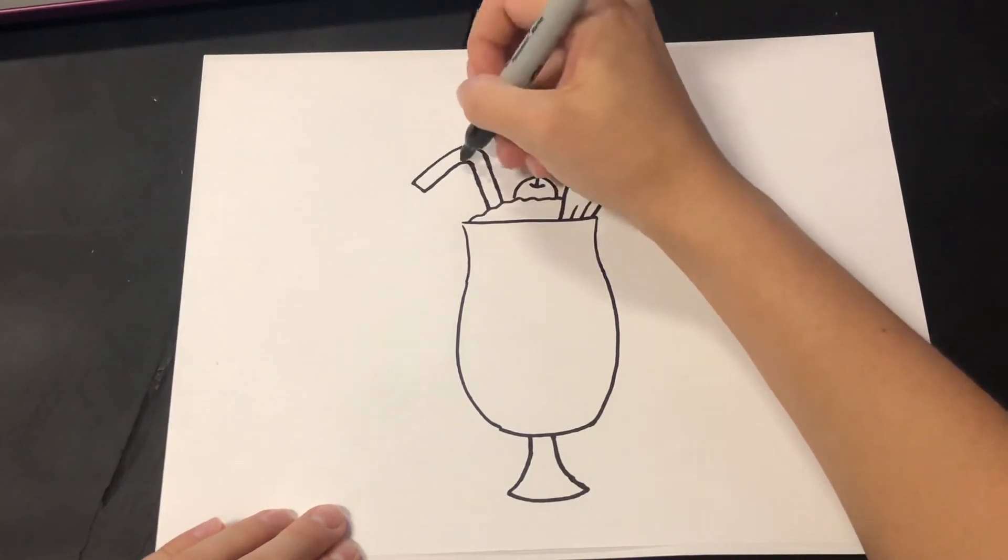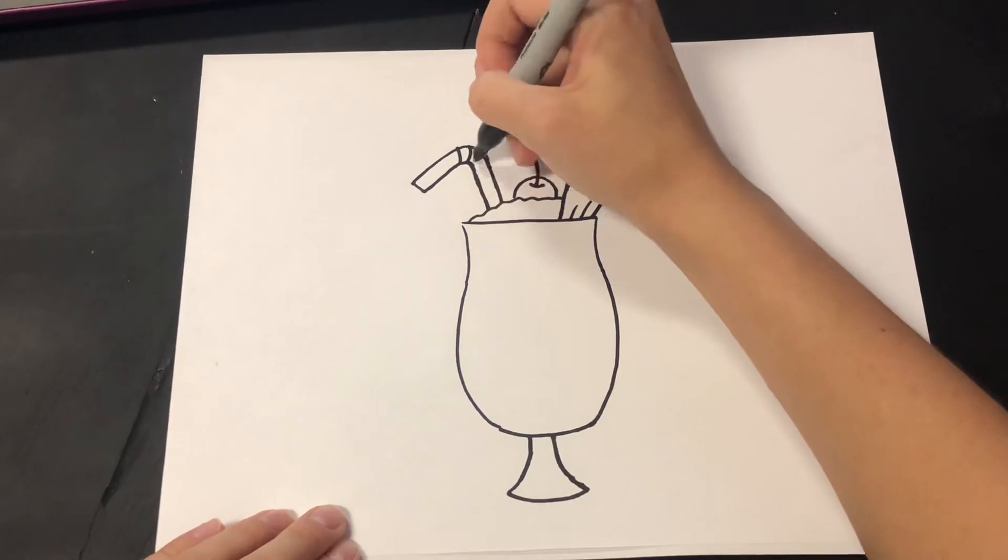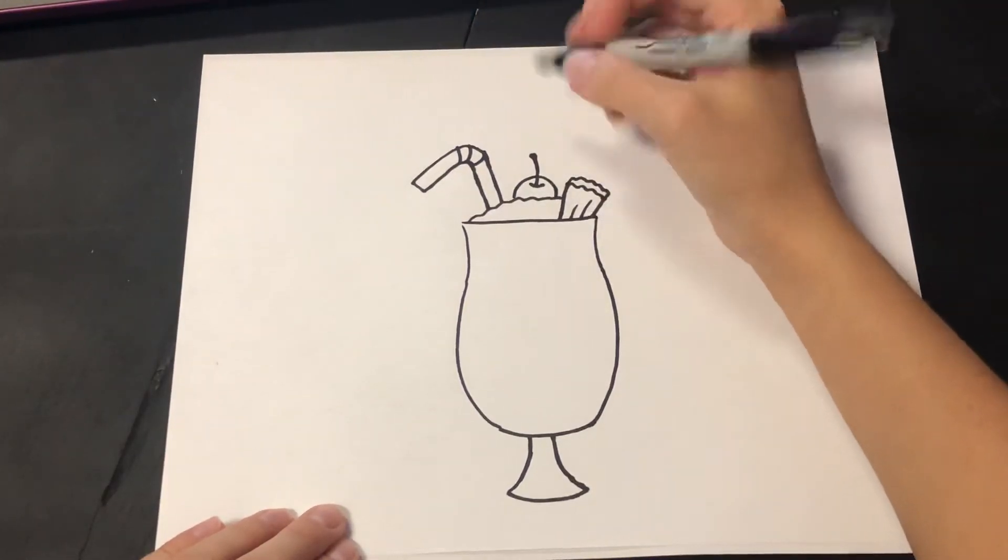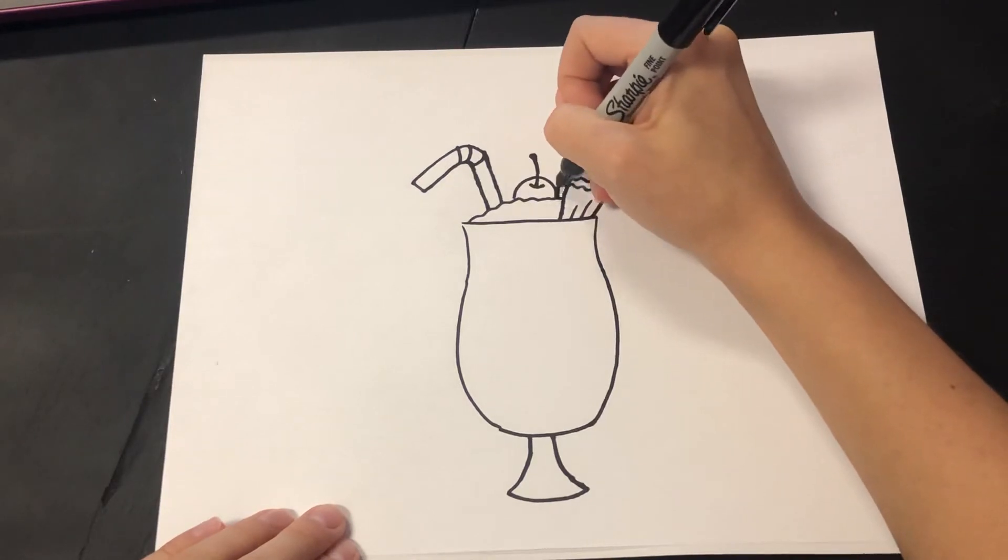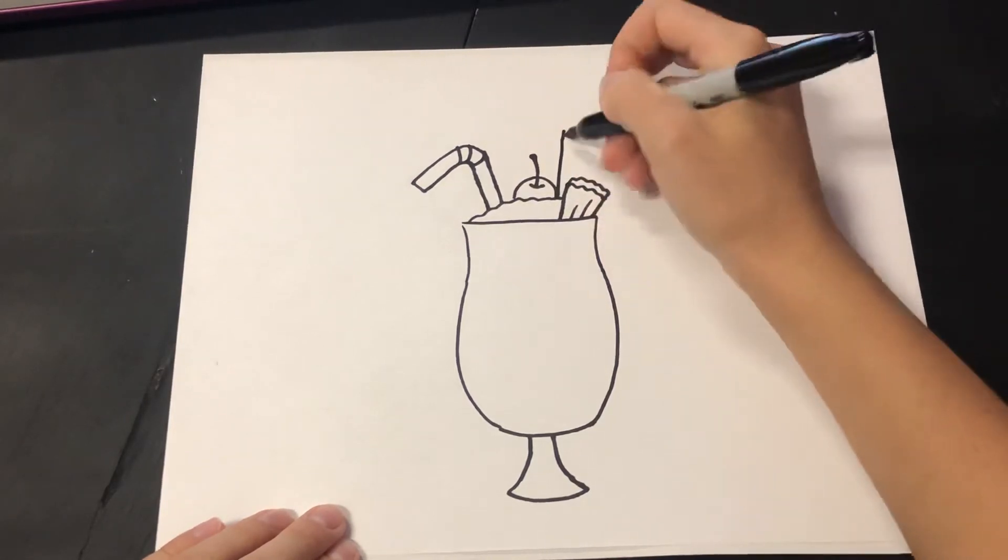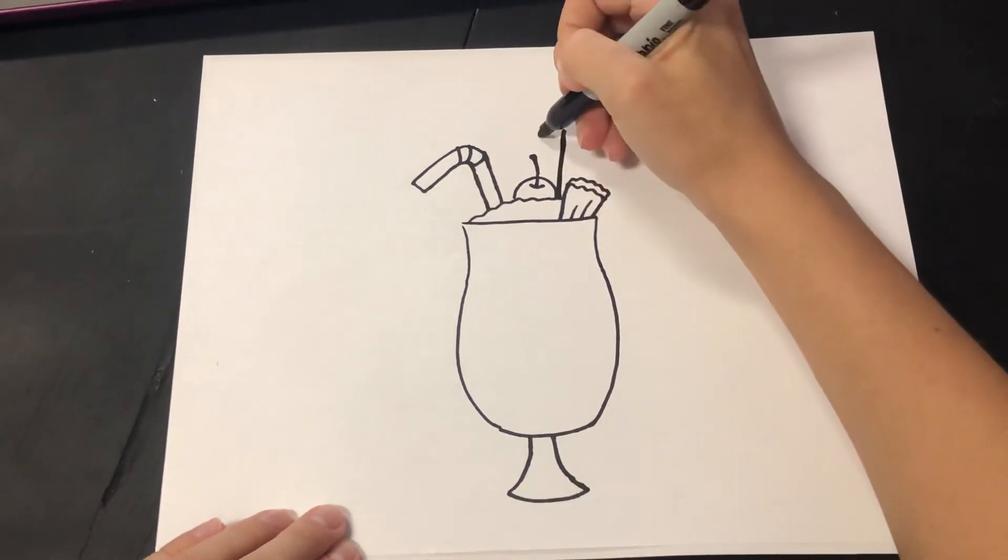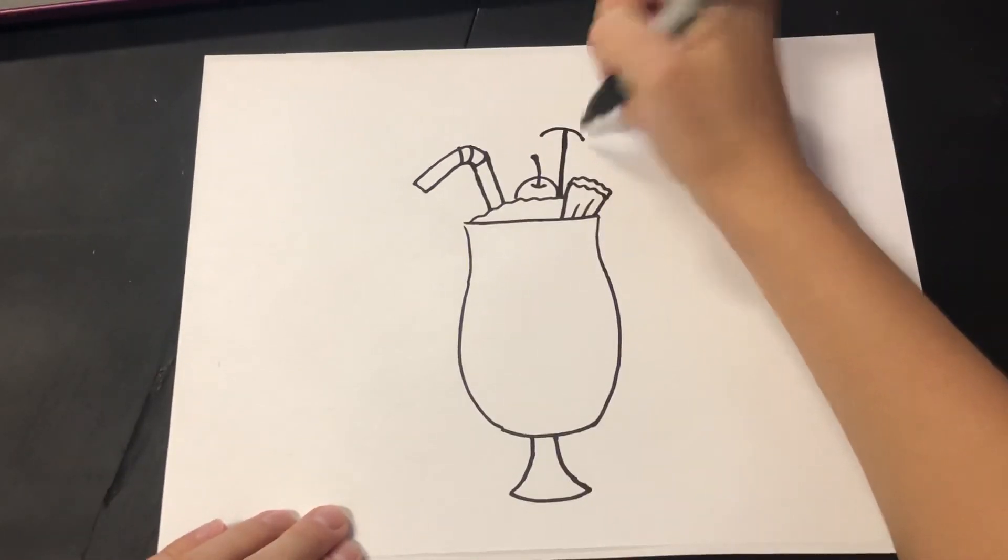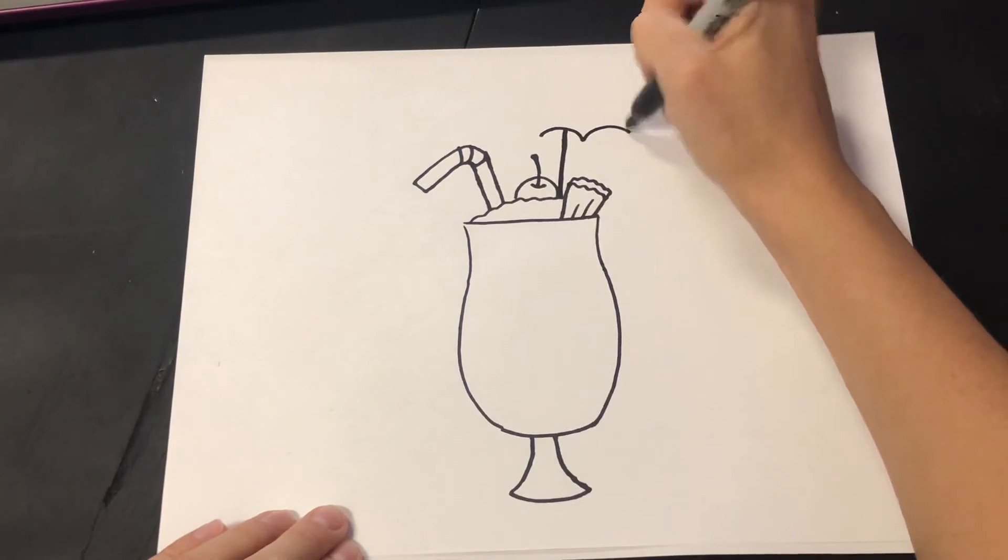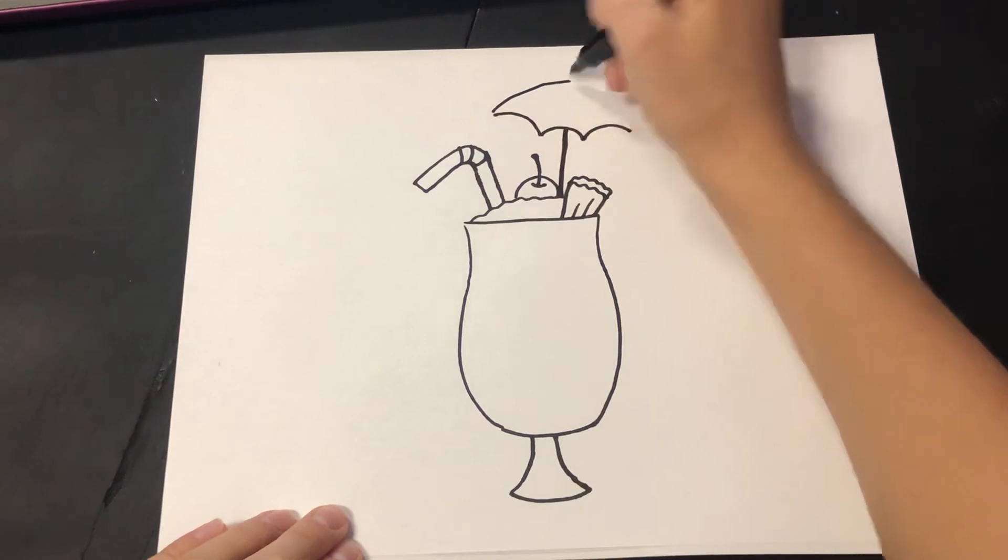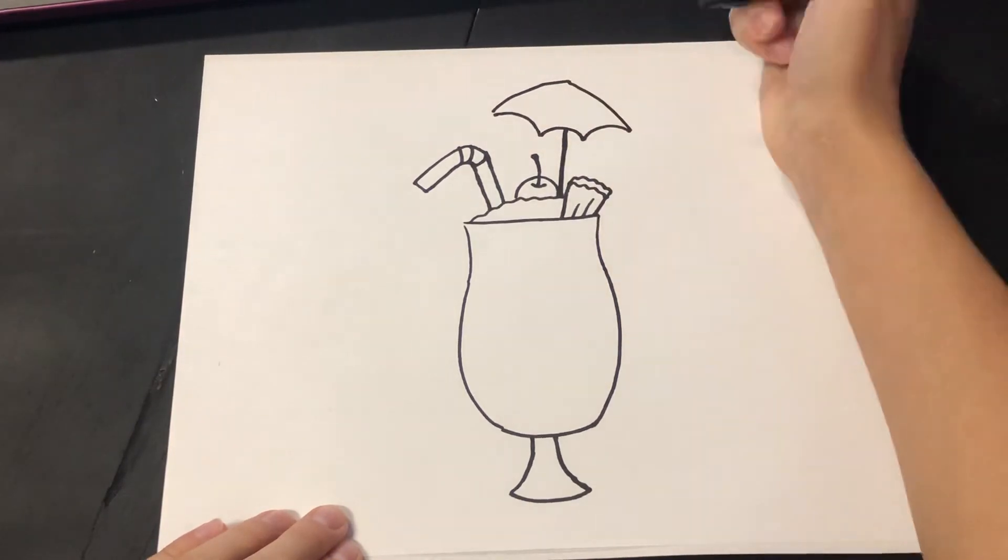To make it a bendy straw I'm just going to add some curved lines like this. And then what's a tropical drink without some umbrellas sticking out? So I'm going to put one line—maybe I'll thicken it up a bit—and then I'll start with a curve here. Another curve there and another curve.